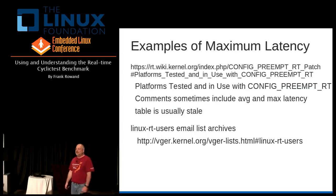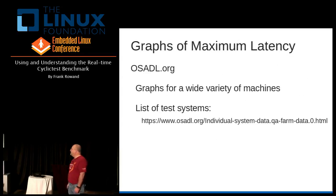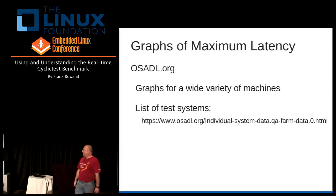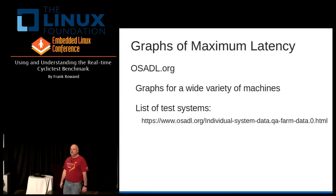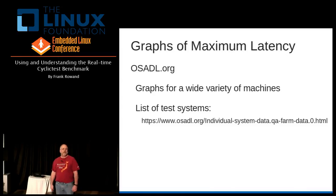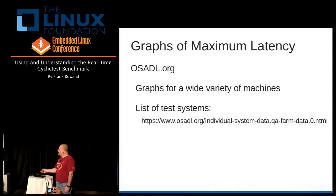Again, not a real comprehensive resource, but it gives you some indications. The gold mine is osadl.org — they have a QA farm and they, every day, measure a very wide variety of machines: different architectures, different sizes, different frequencies, different kernel versions. And you can go there — don't bother writing down the URLs, the slides are available.